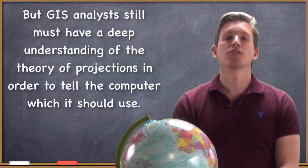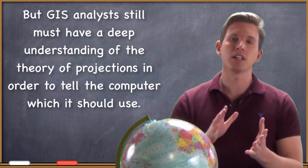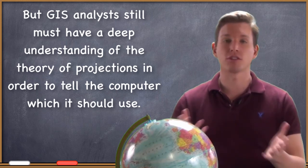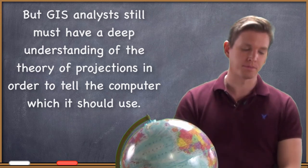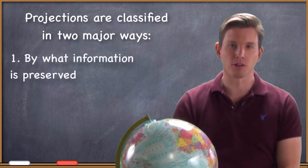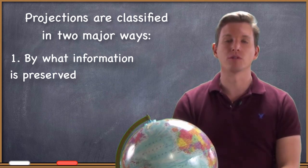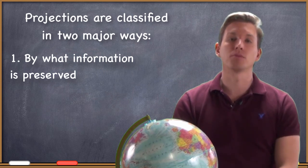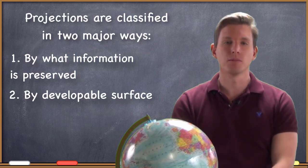So I'm going to show you that this process of going from 3D coordinates to 2D coordinates is difficult. Then I'm going to give you two different major ways that we classify projections. There is no such thing as a perfect projection for all applications, so we need to understand the different ways that projections work. The first way is by what information is preserved — what a particular projection gets right or preserves when making that conversion to 2D coordinates. The other major way we classify projections is by developable surface. We're going to talk about each one of those in more detail coming up.